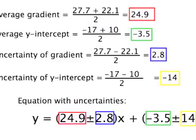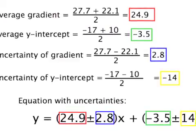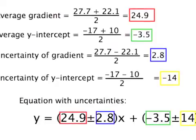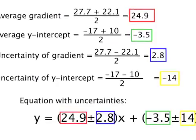Once all these values are found, they're put into the equation of the form y equals mx plus b, where the m and the b are both written with their uncertainties.